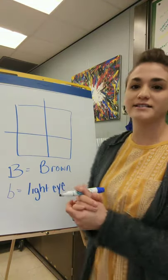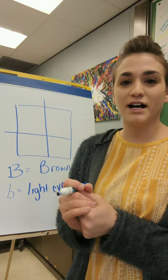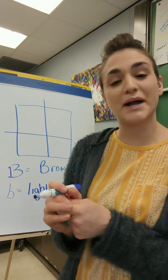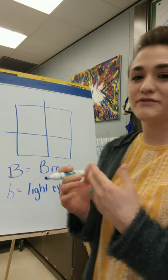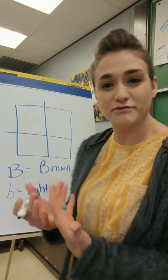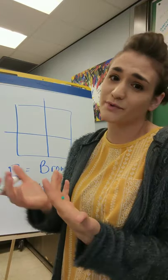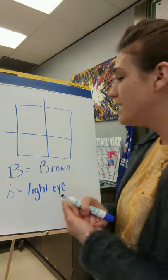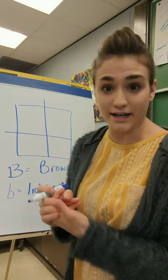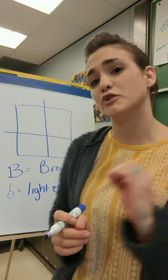We have brown eyes or light eyes — two different options. If you have brown eyes, there are two different genotypes you can be. Genotype refers to the two genes you have for a trait, because we all have two genes for every trait — we get one from mom and one from dad.